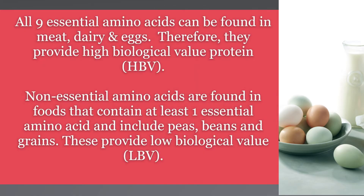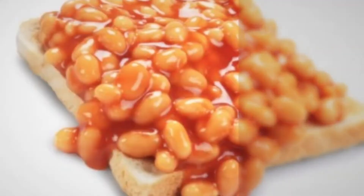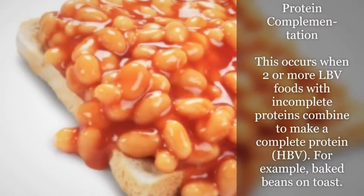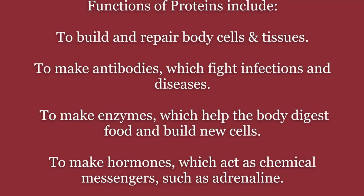Low biological value proteins, or LBV, are proteins that do not contain all of the essential amino acids. These include peas, beans, and grains. If you eat a mixture of LBV proteins together — such as beans on toast — the essential amino acids missing in one food will be provided by another LBV protein, so you will get all the amino acids needed. This is called protein complementation.